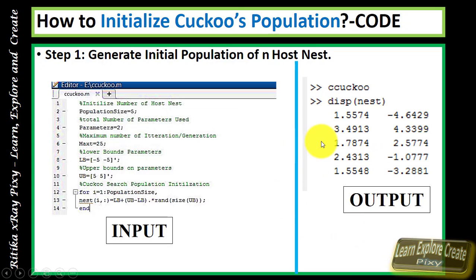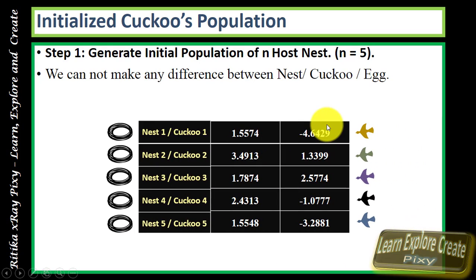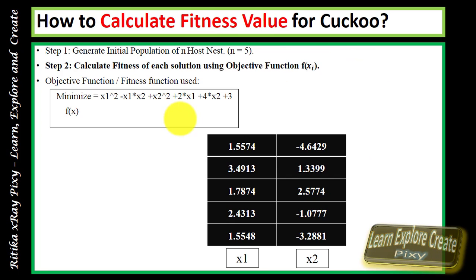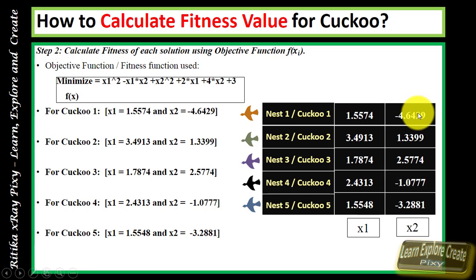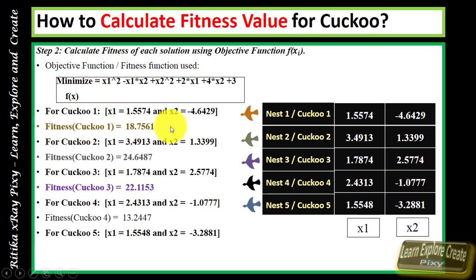This is the output of the initialization code — we initialize the population for five cuckoos. Note that we cannot make a difference between nest, cuckoo, or egg, so I use the term 'cuckoo' for all. After initialization, we calculate the fitness value using the objective function f(x). For each cuckoo, x1 and x2 values are substituted into the objective function to get the fitness value for each cuckoo.